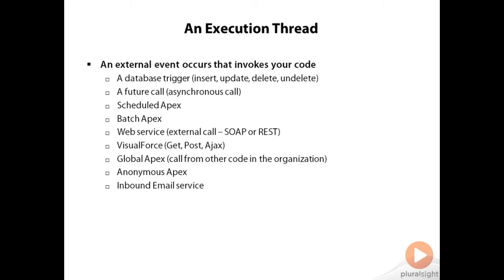An execution context begins when an external event occurs. Different kinds of external events can create different types of execution contexts, which have different limits and different capabilities. The most common events that can launch execution contexts are shown here. You have a database trigger — that's an insert, update, delete, or undelete trigger. These can be both before and after database commits, on both standard and custom objects.